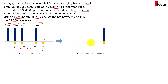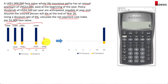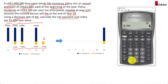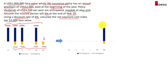Using the financial calculator for the premiums: the first cash flow happens today, so this is an annuity due — press Second PMT to change to BGN mode and exit. Set PMT = 22,000, N = 20, I/Y = 6, PV = 0, then compute the future value. That gives $857,839.9869.